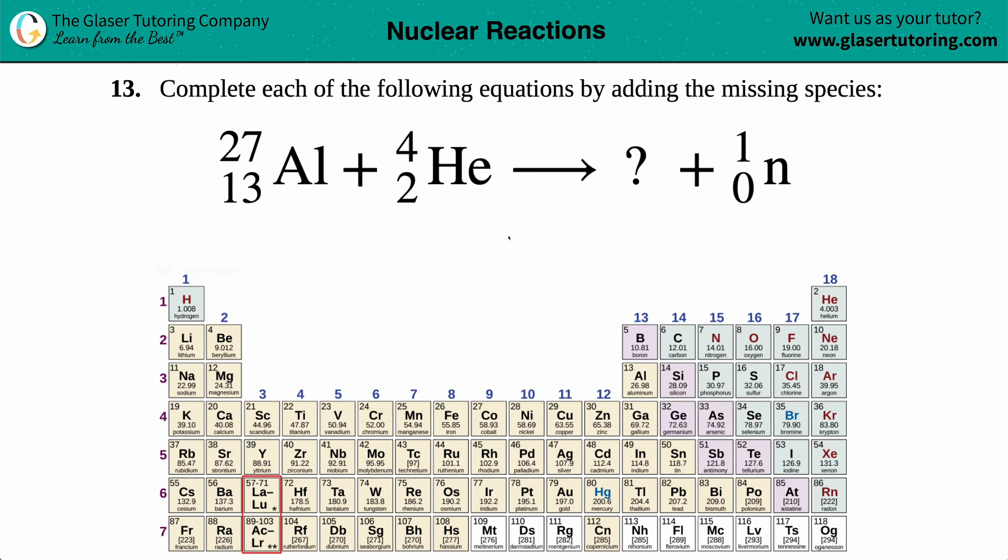Number 13: Complete each of the following equations by adding the missing pieces. We have this balanced equation here where we have an atom of aluminum with an atomic mass of 27 and an atomic number of 13 coming together, plus a helium atom, 4 on the top, 2 on the bottom. That's going to transform into two pieces. We need to find out what this question mark is.